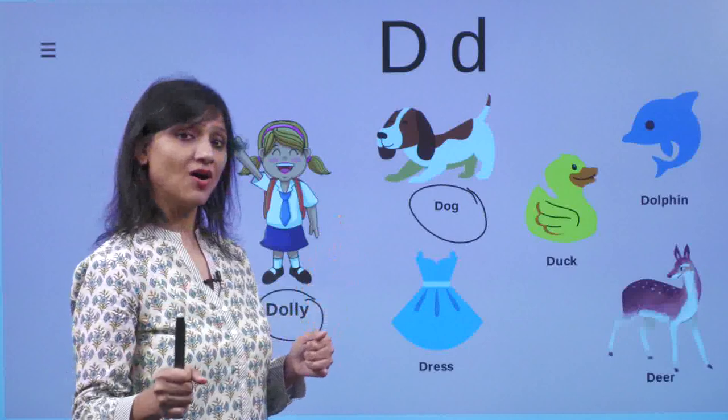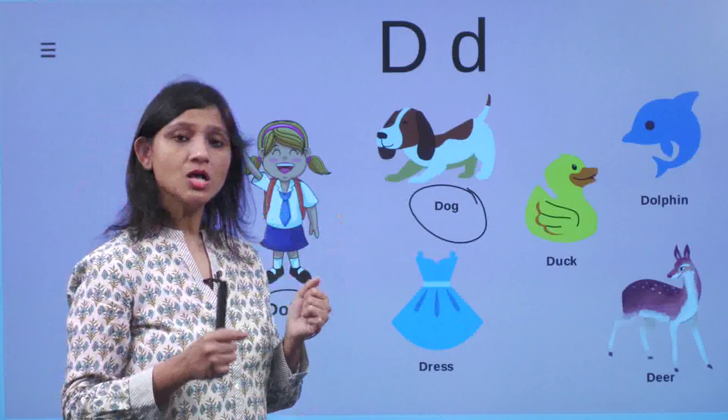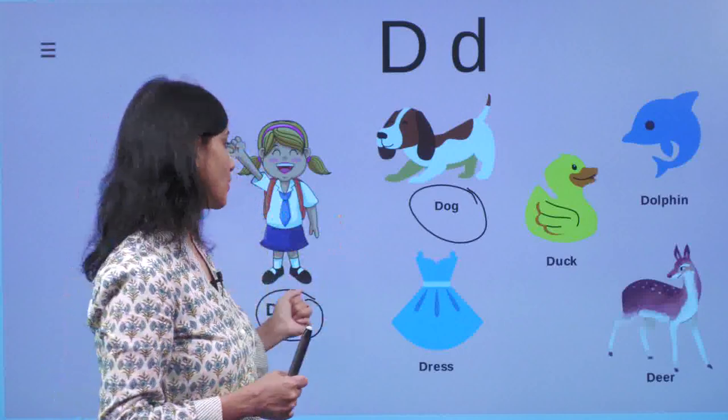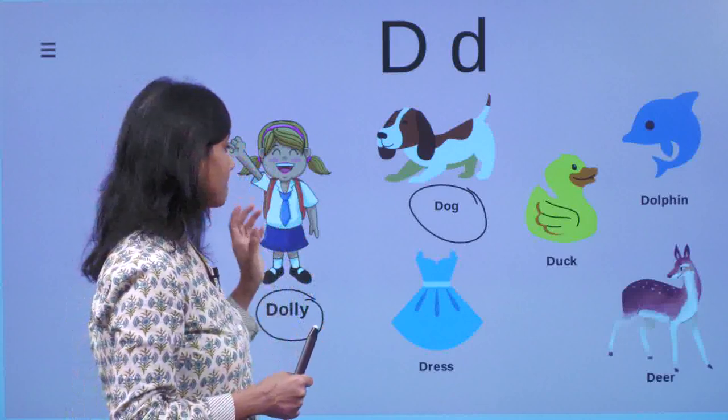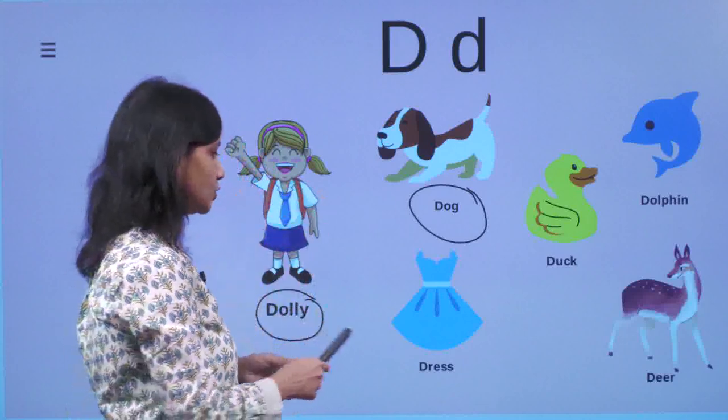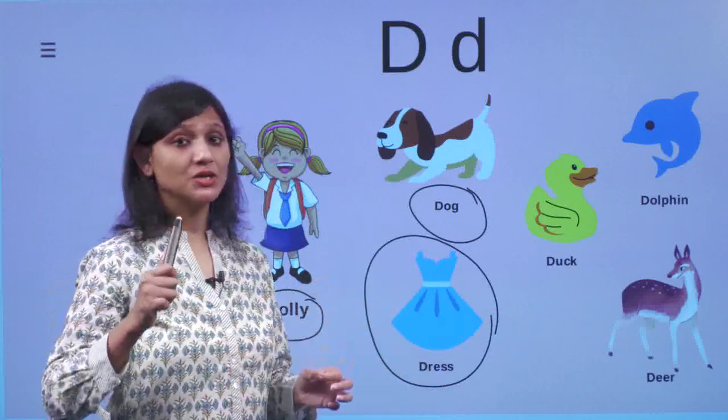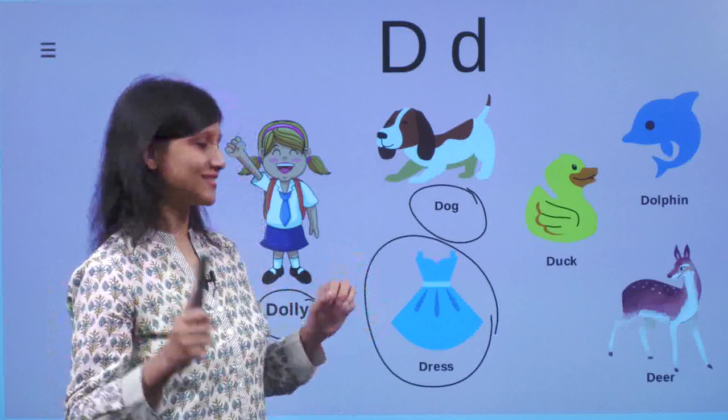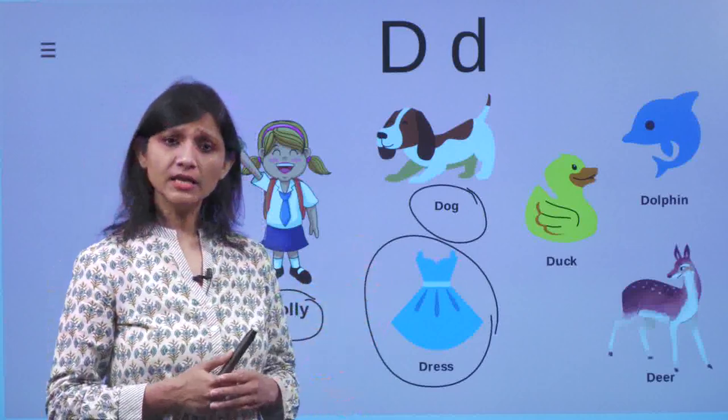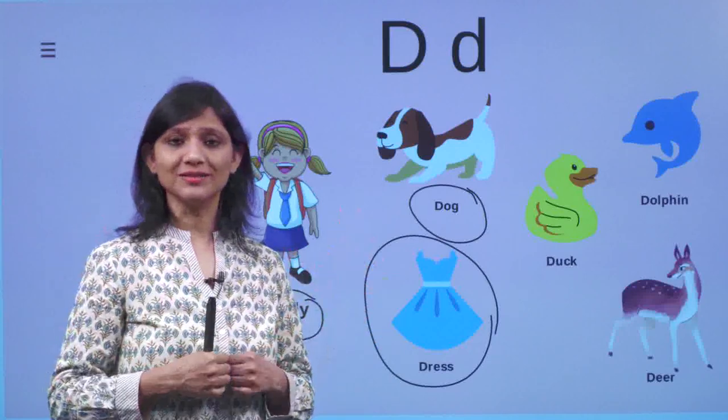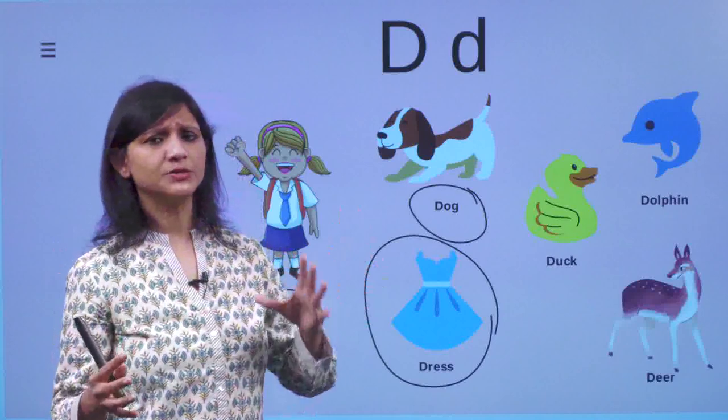So Dolly and her dog went to a zoo. But before going to the zoo, Dolly wore her favorite dress and she went to the zoo. In the zoo, she saw a lot of animals and she was really happy seeing the animals, birds, reptiles.